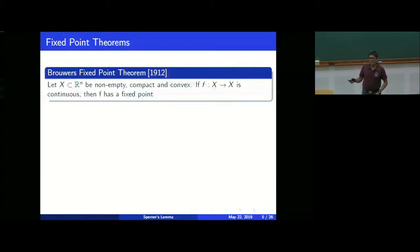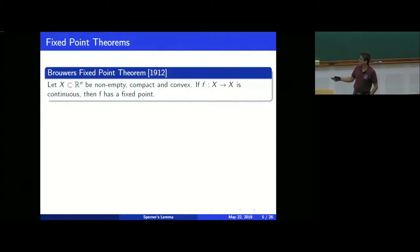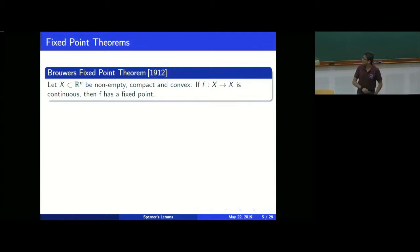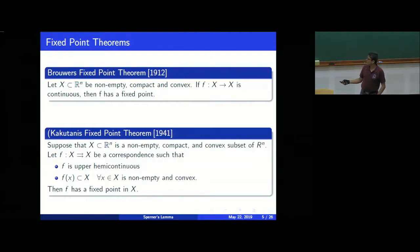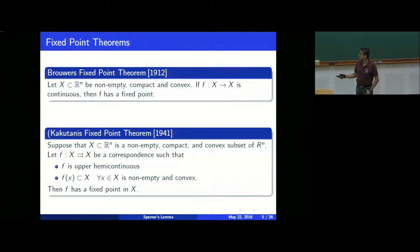I'll go through this quickly because Amal will cover it properly. Brouwer's fixed point theorem says that given a continuous function F from X to X, it needs to have a fixed point. In 1941, Kakutani extended the same thing to correspondences — given a correspondence from X to X, if it is upper hemicontinuous, non-empty, convex, and compact, then it should have a fixed point.